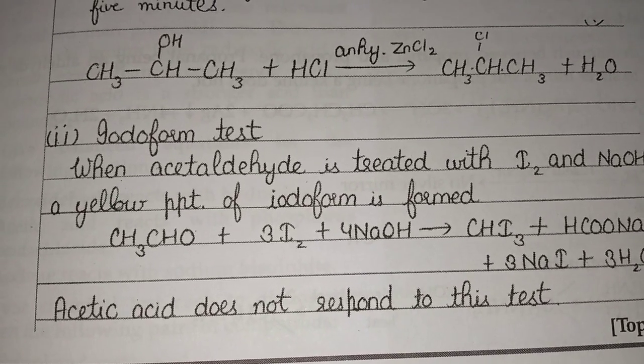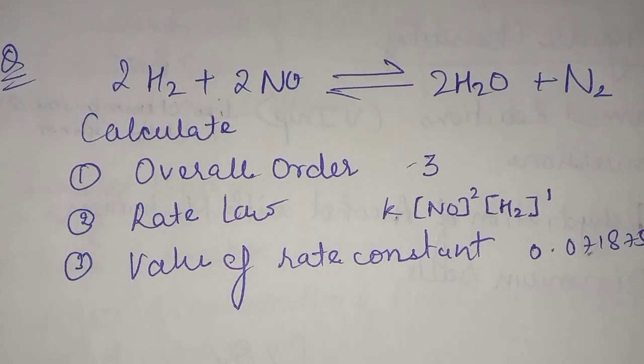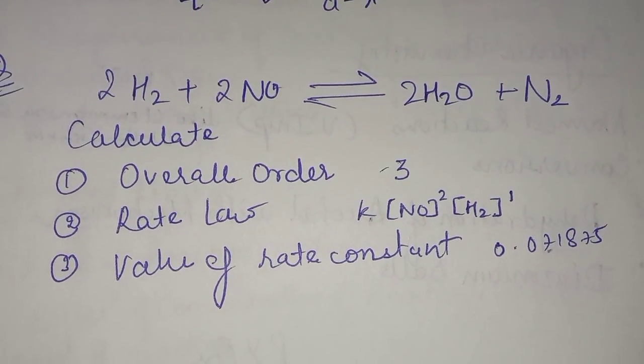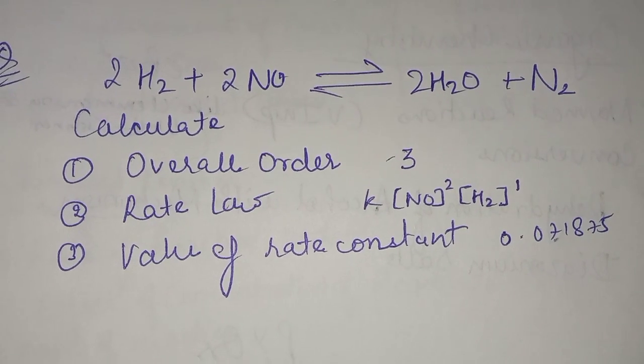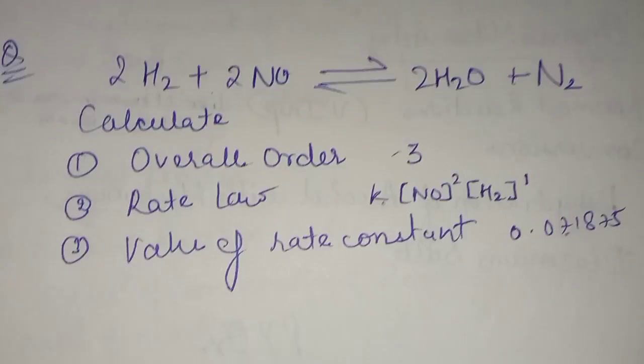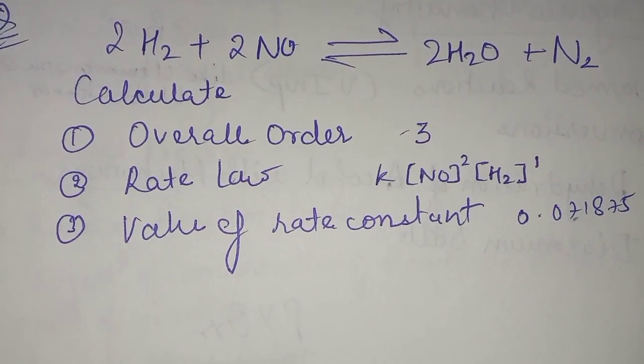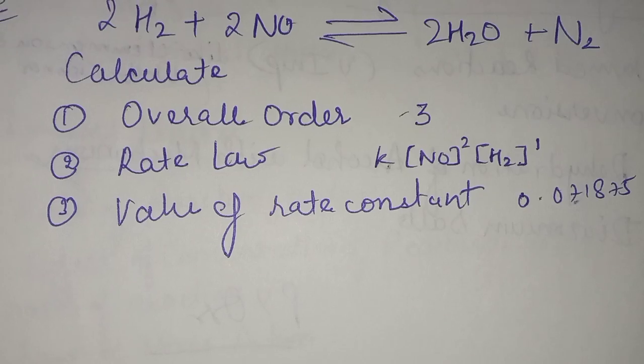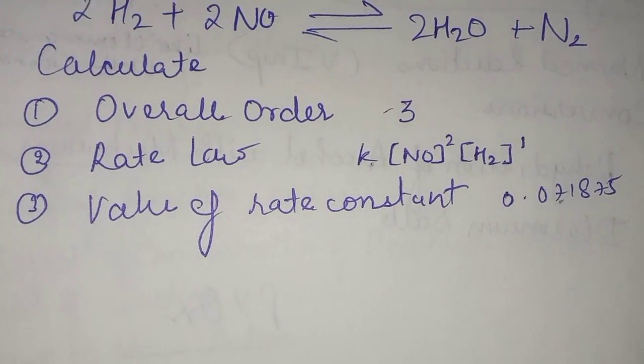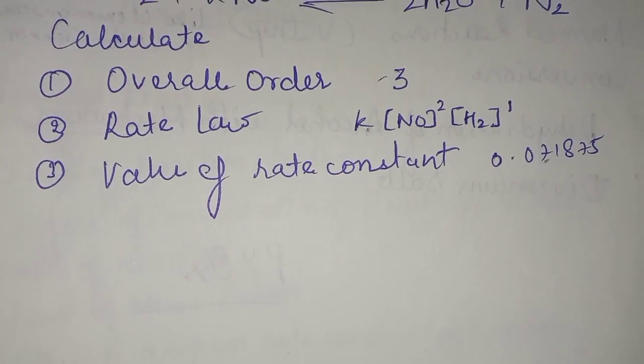And there is this reaction given: 2H2 plus 2NO gives 2H2O plus N2. You have to calculate overall order, rate law, value of rate constant, and the answers are also provided here. Overall order is 3, the rate law answer is k[NO]²[H2]¹, value of rate constant is 0.0718987.